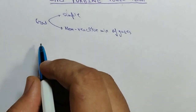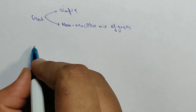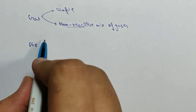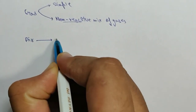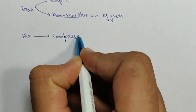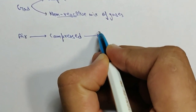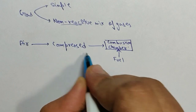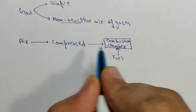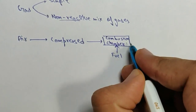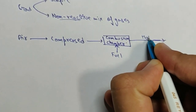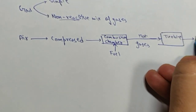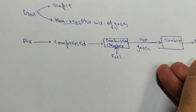The basic working principle of gas turbine power plant is as follows: first, air is taken from the atmosphere, or it is supplied as a non-reactive mixture of gases. Then the air is compressed and sent into a combustion chamber. In the combustion chamber, fuel is added and the compressed air gets heated because of the burning of the fuel. Then these hot gases are sent to the turbine, and the turbine drives the alternator.